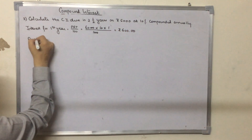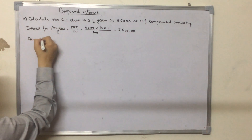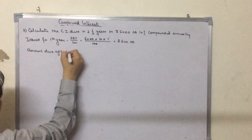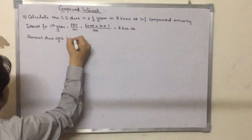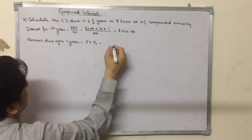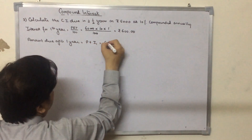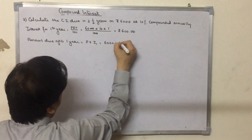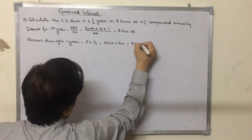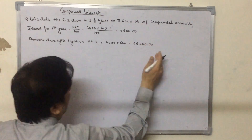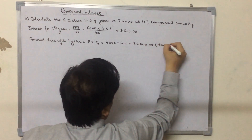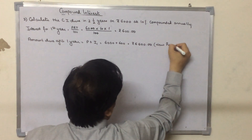We next find the amount due after one year. It will be P plus I1. The principal is 6000 plus 600, which gives 6600 rupees. This 6600 acts as the principal for the second year.